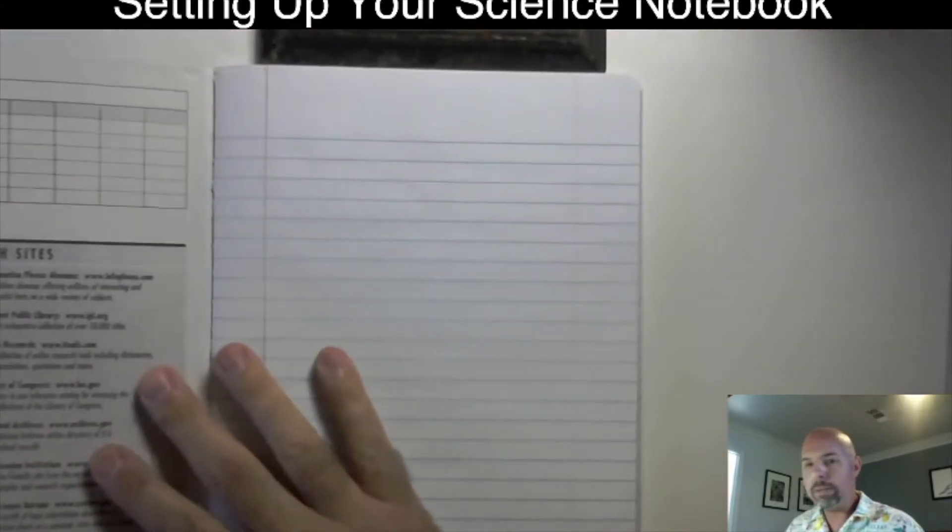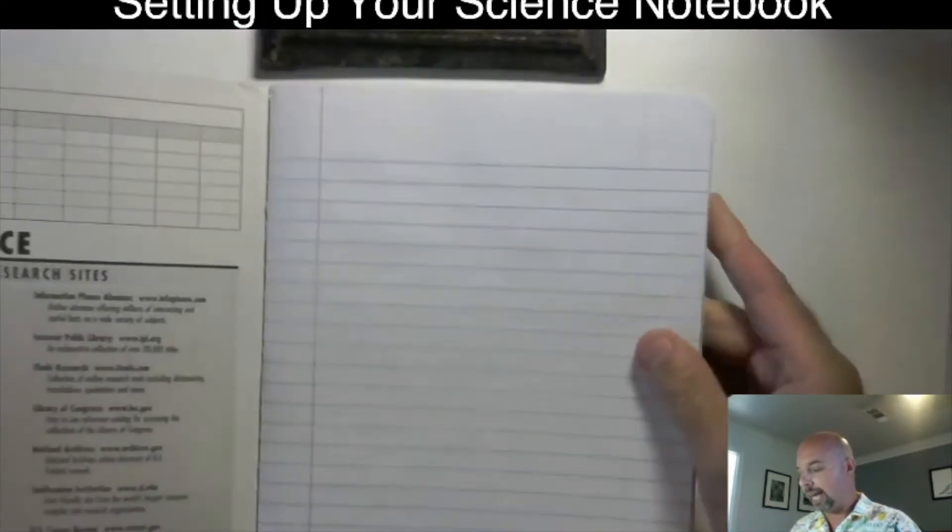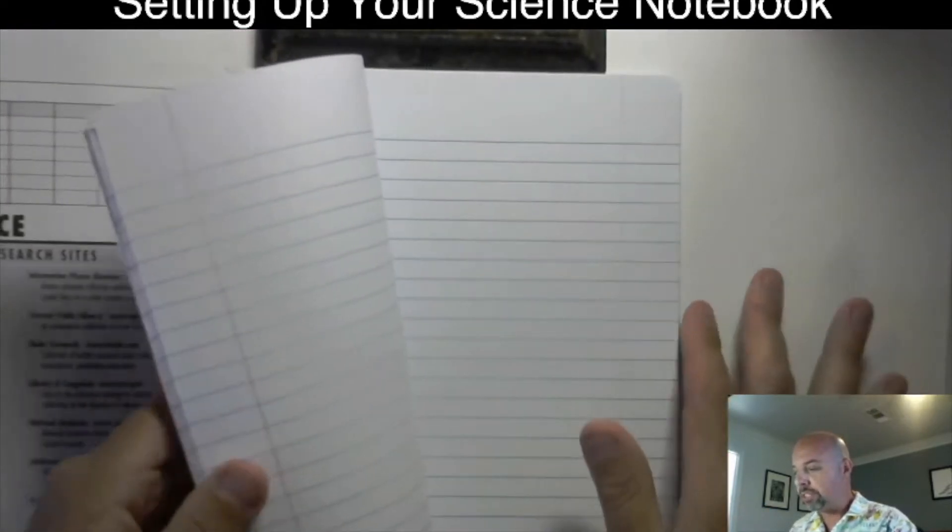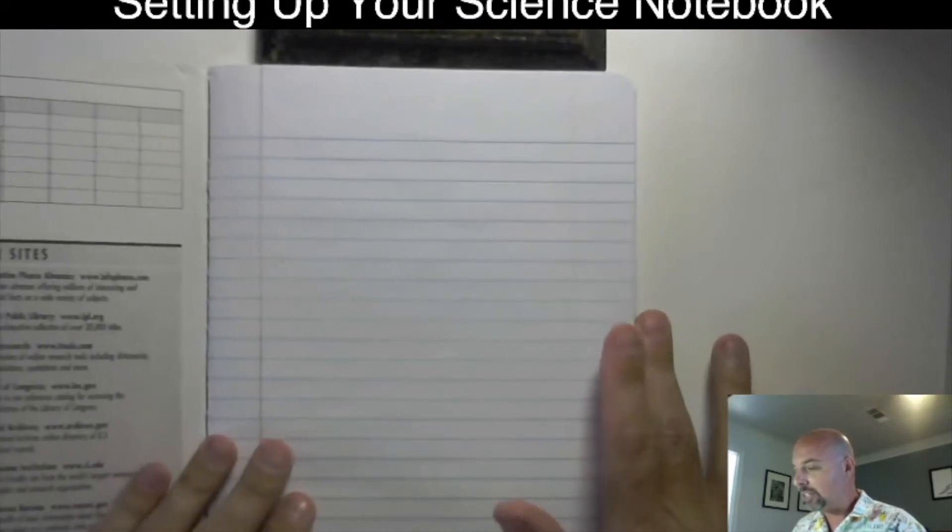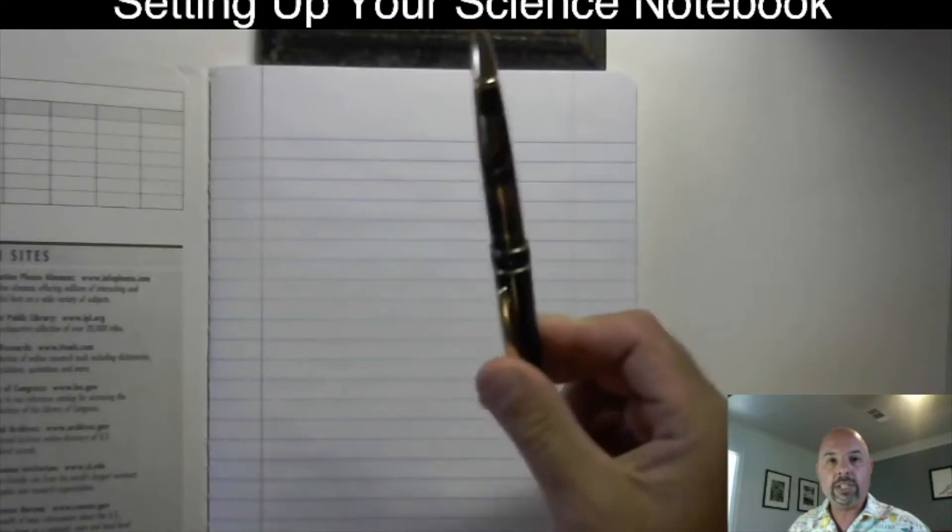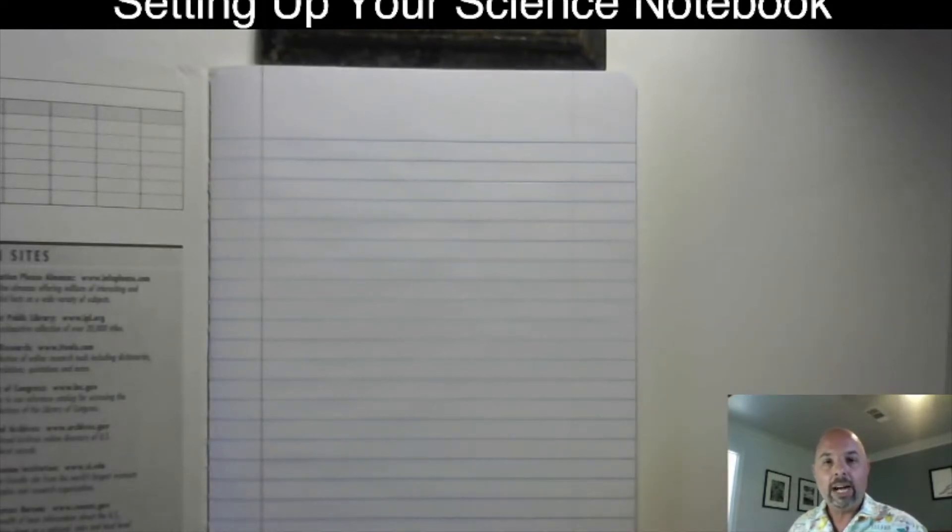So we're going to open up our science notebook. Ah, there you go, that new notebook smell. And so the first thing that we're going to do, the other thing that you need to start doing this is a pen. You can go ahead and get fancy if you want to. You can get lots of different colors. I'm going to keep things simple for this video. I'm just going to use a regular blue pen. But you're welcome to make it as colorful and as creative as you want. I think that's awesome.